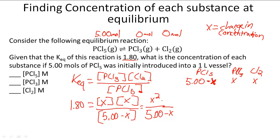We're going to put this into a quadratic form, so x squared plus 1.80x minus 9.00 equals 0.